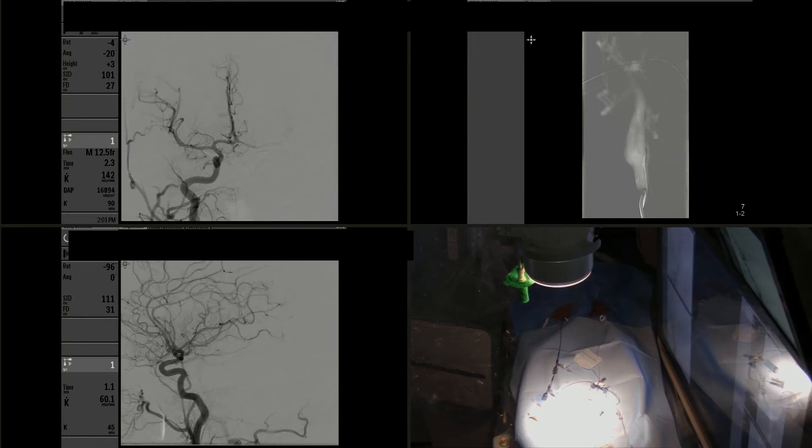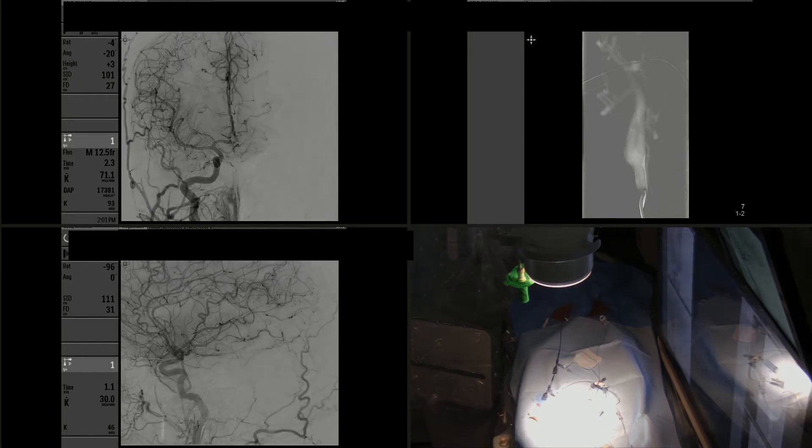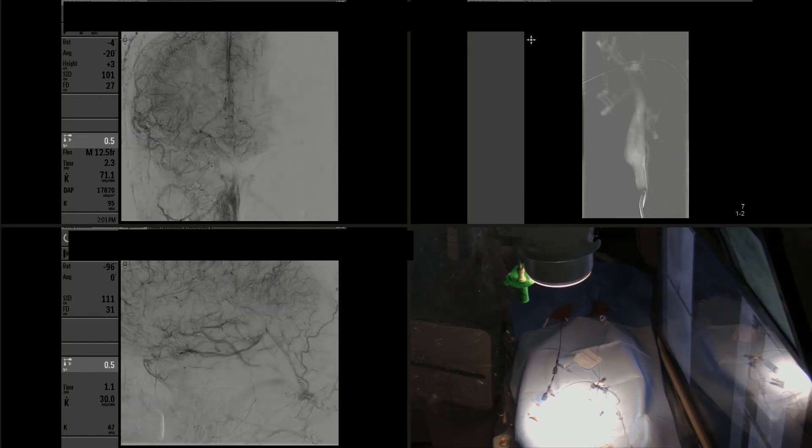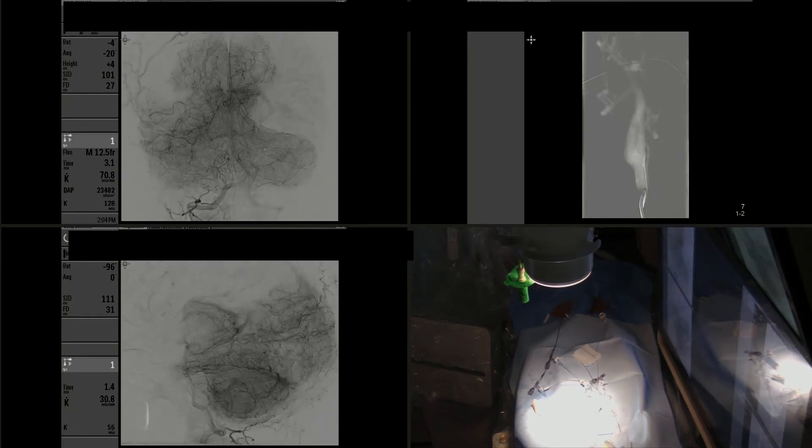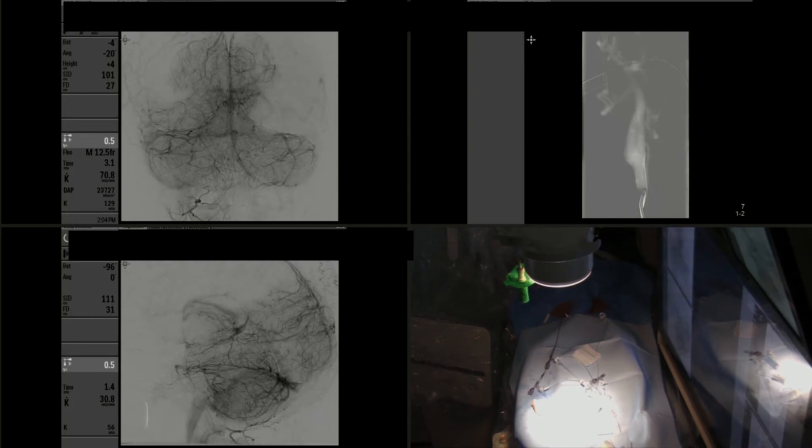As part of the workup, we did an angiogram of the external carotid artery that demonstrated there was no supply to the arteriovenous malformation. We did a contralateral carotid injection that did not show evidence of arteriovenous shunting, and we also checked the posterior circulation. As you can see, the right vertebral artery injection doesn't show any significant supply to the malformation.